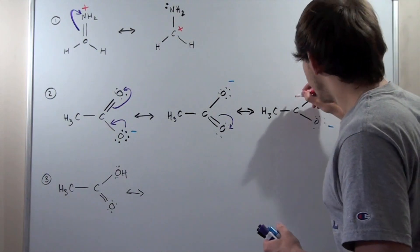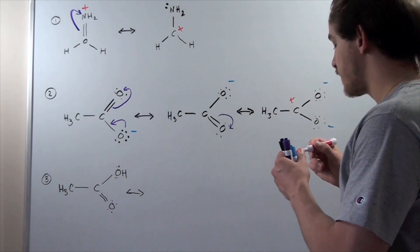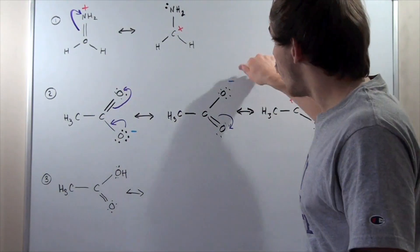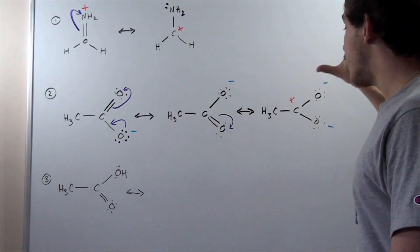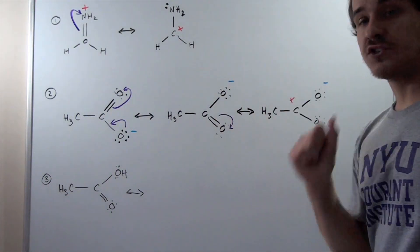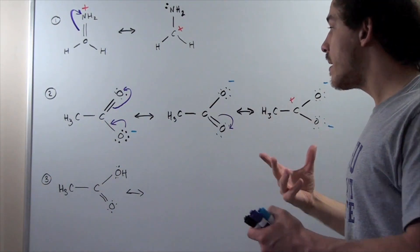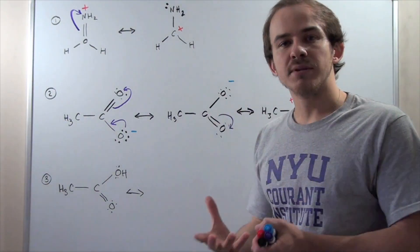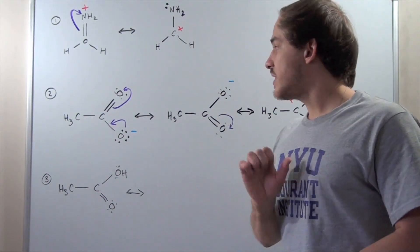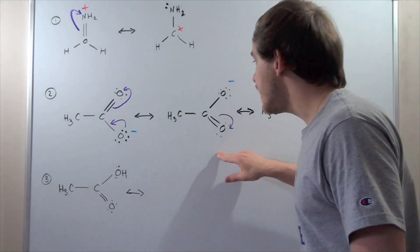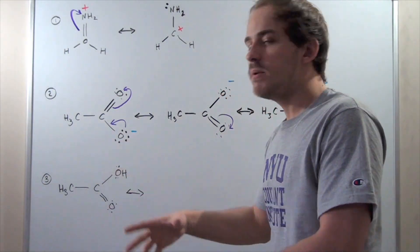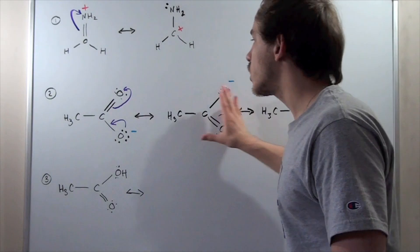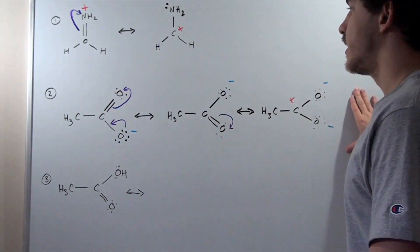Now we have the following species. Notice that in the first resonant form we have only one negative charge, but in this third resonant form we have two negative charges and a positive charge. Remember, whenever we have a lot of charge, that destabilizes the structure. That basically means these two resonant forms — the ones with only one charge — will be more important, and those are our major resonant forms.